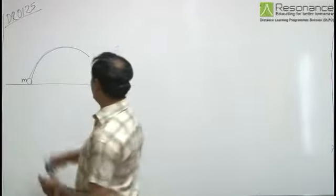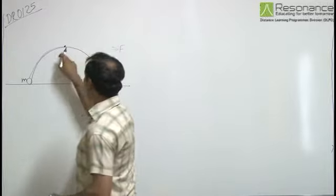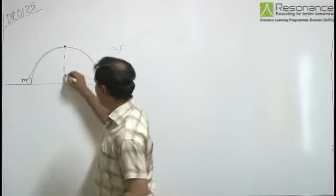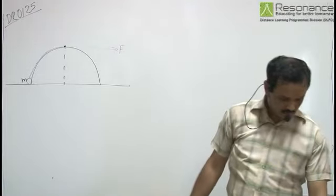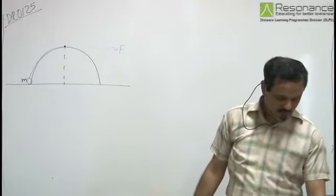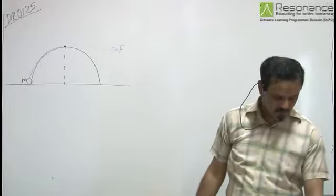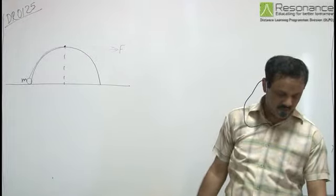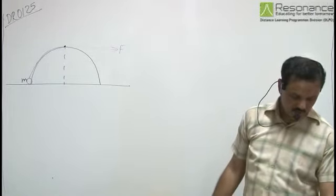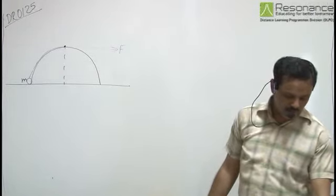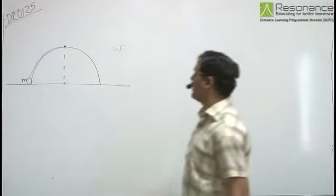So from bottom, it has to be pulled up till top of the hemisphere. Now find the work done by the tension in the string if radius of hemisphere is R and coefficient of friction is mu. We need to assume the block is pulled with negligible velocity.